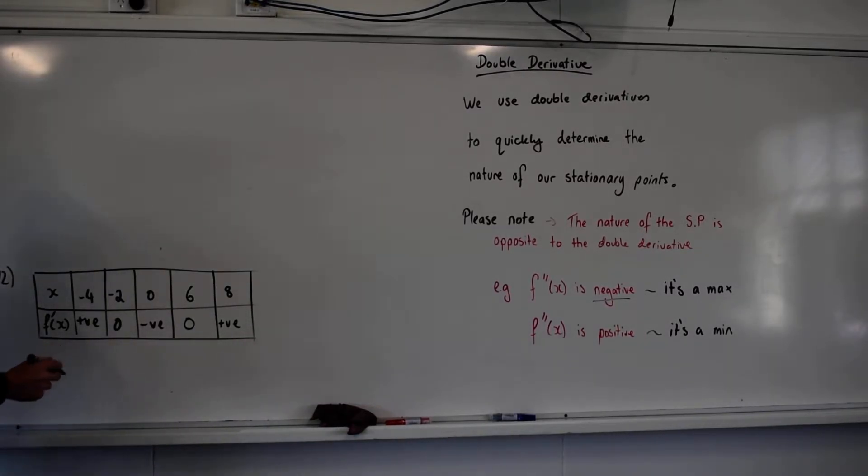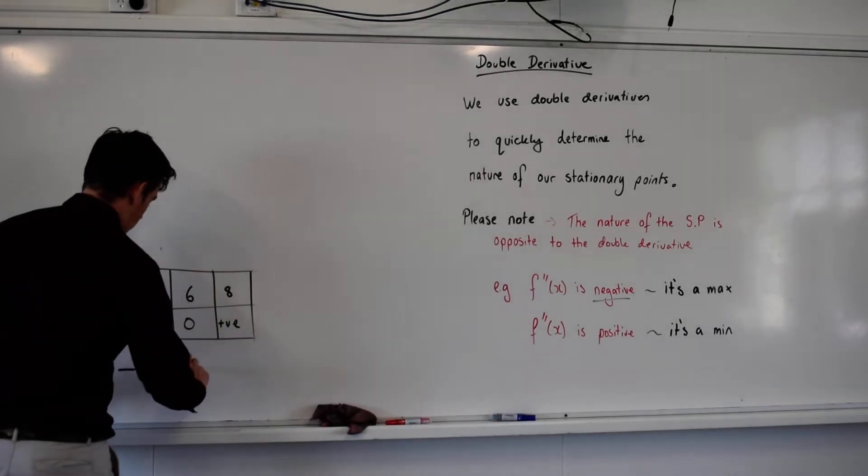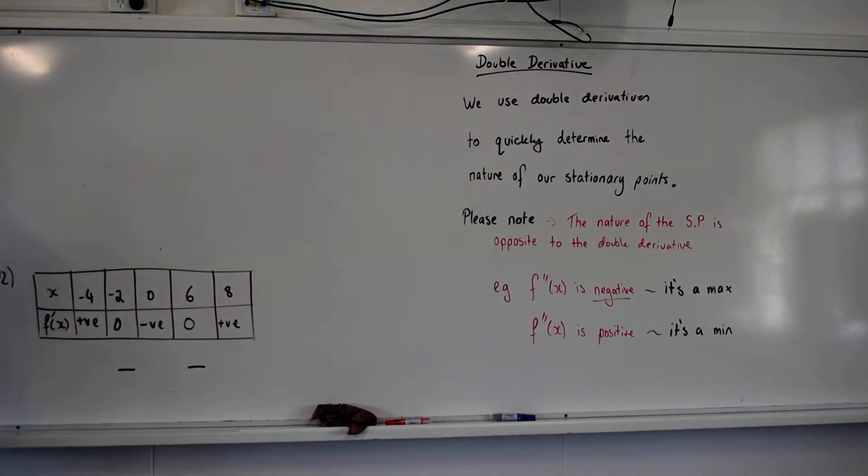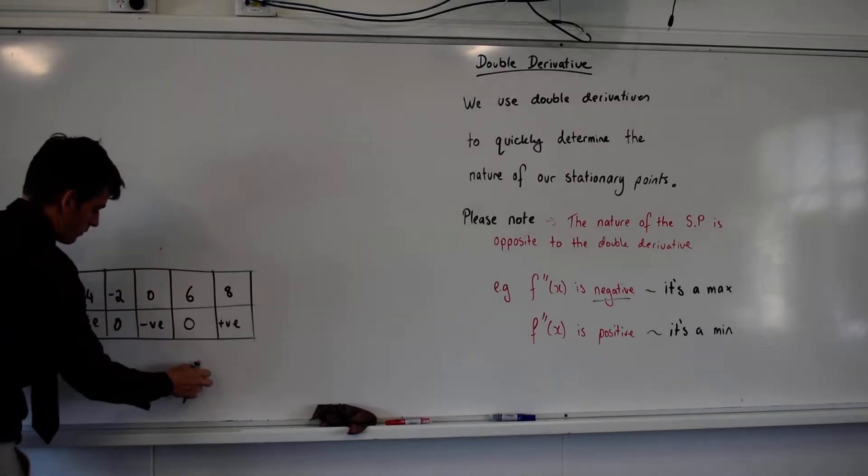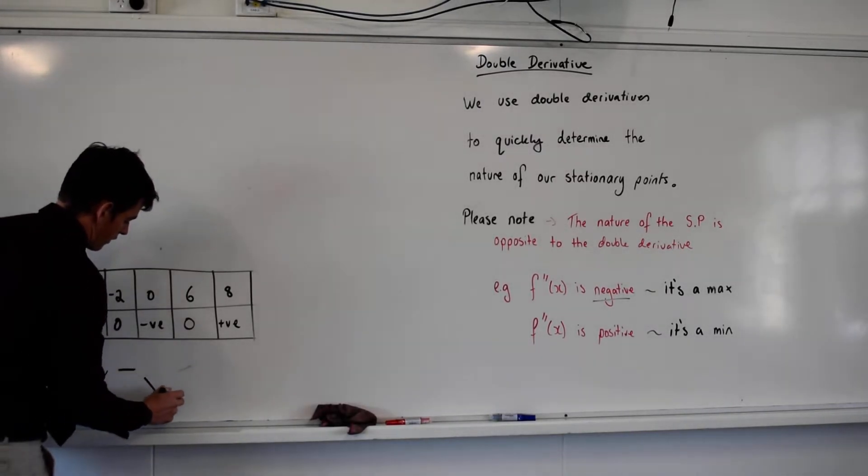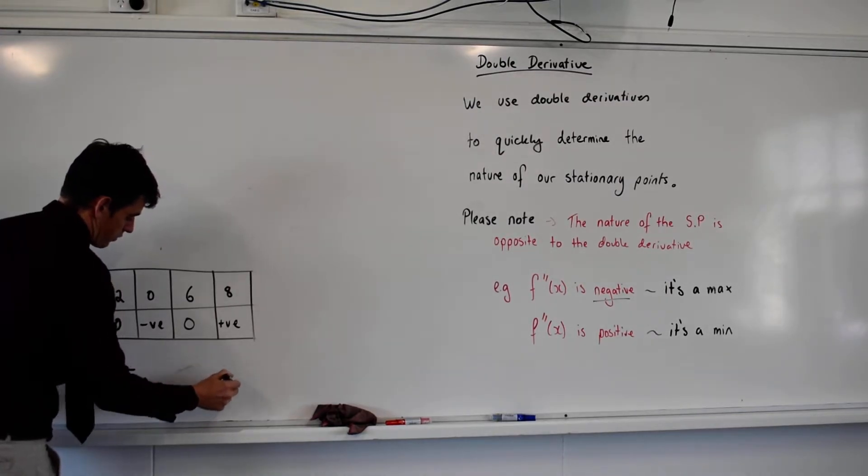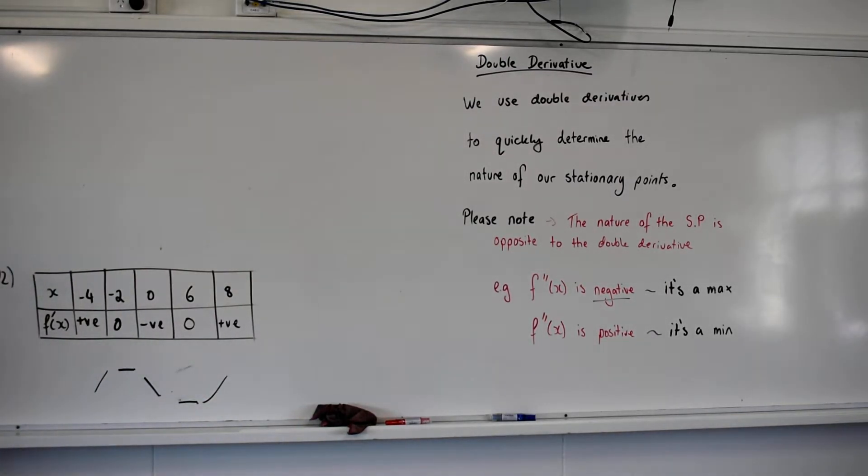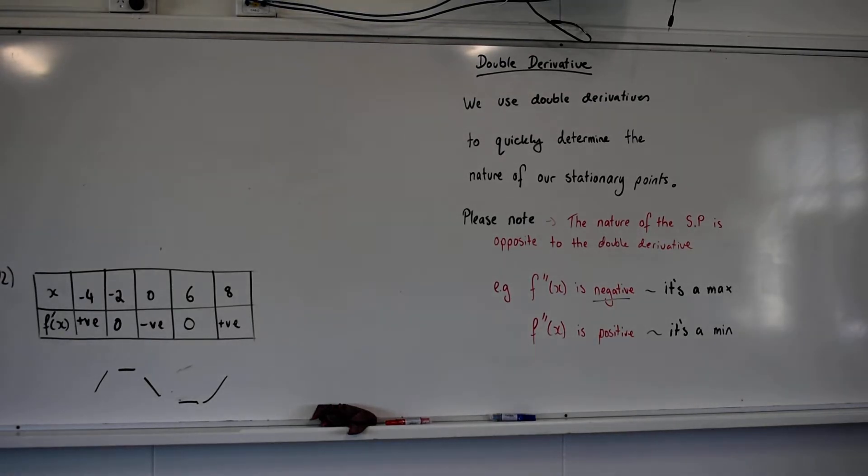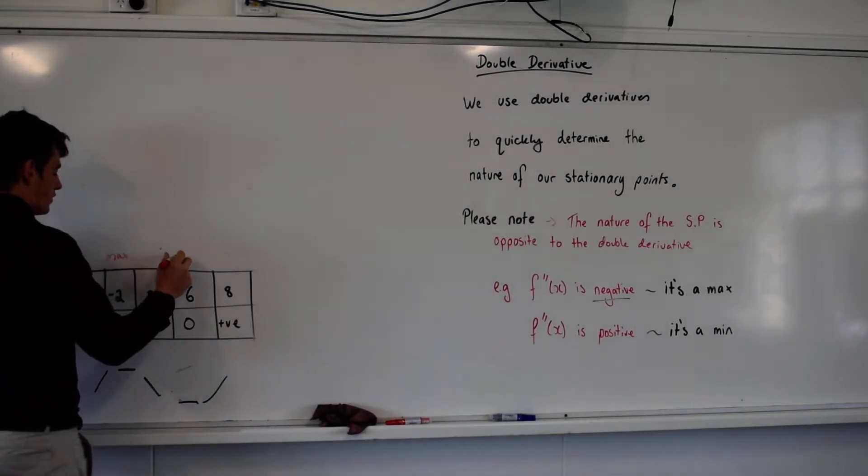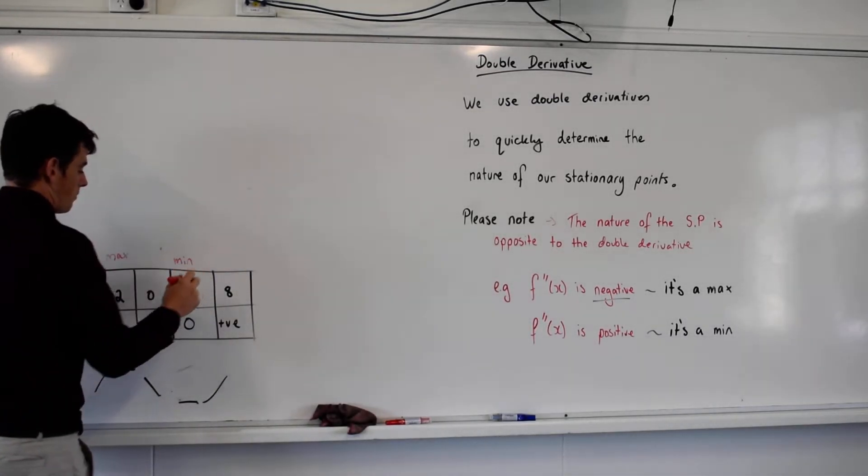The graph will look something like this, the flat lines obviously occur there. It's going to go positive, to negative, to flat, to positive. So which one of those is the minimum and which one of those is the maximum? Negative two is the max and positive six is the min.